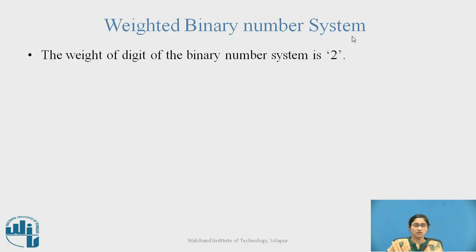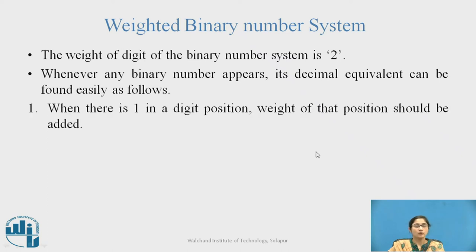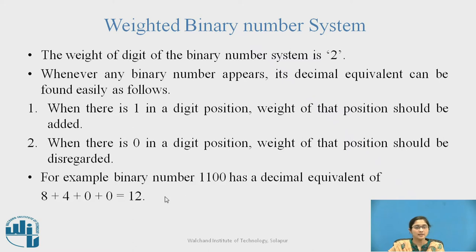Weighted Binary Number System. The weight of a digit in the binary number system is 2. Whenever any binary number appears, its decimal equivalent can be found as follows: when there is a 1 in a digit position, the weight of that position should be added; when there is a 0 in a digit position, the weight of that position should be disregarded.